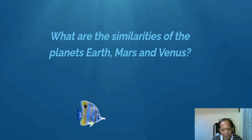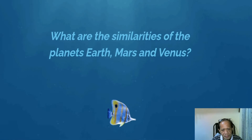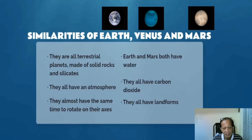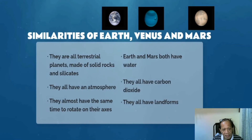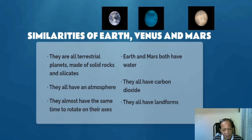Let's take a look at the similarities of our planet with its neighboring planets, Mars and Venus. Number one, they are all terrestrial planets — meaning they are made up of solid rocks and silicates. They all have an atmosphere. They almost have the same time to rotate on their axis. Earth and Mars both have water, and they all have carbon dioxide and land forms. These are the similarities of Earth, Venus, and Mars.